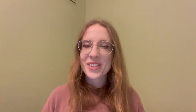They used an apparatus which is shown on the screen now. You can see there are two main chambers. The lower chamber represented the Earth's oceans, so it contains water which they got to boil. As they boiled the water, the water vapour rises and goes up into the upper chamber that you can see on the top right.